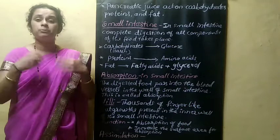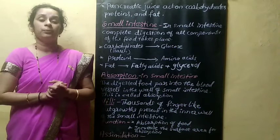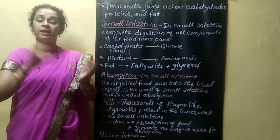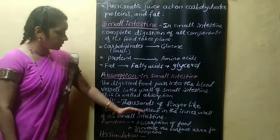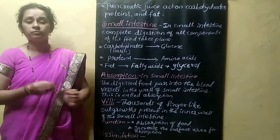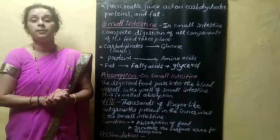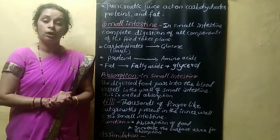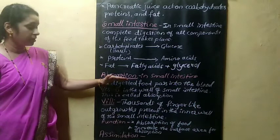To aid absorption of different types of food components, there are finger-like outgrowths present in the inner wall of the small intestine called villi. Thousands of these finger-like outgrowths are present in the inner wall. Villi help in the absorption of food and also increase the surface area for absorption.